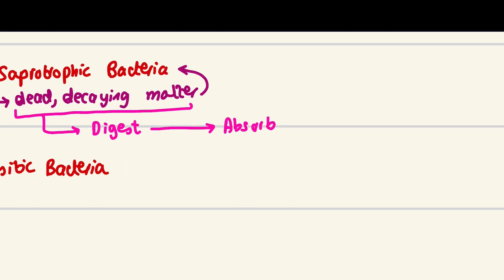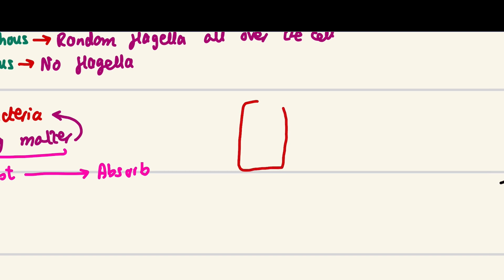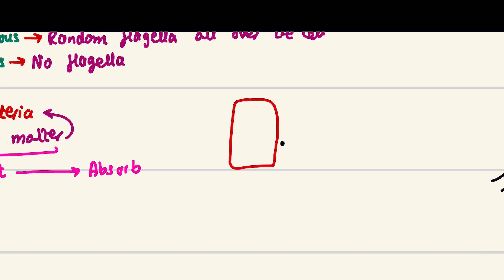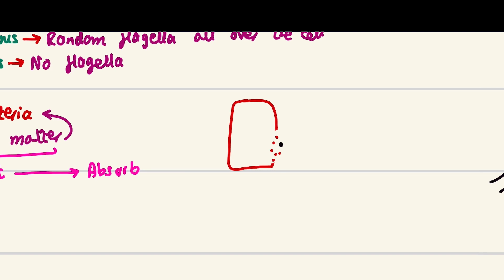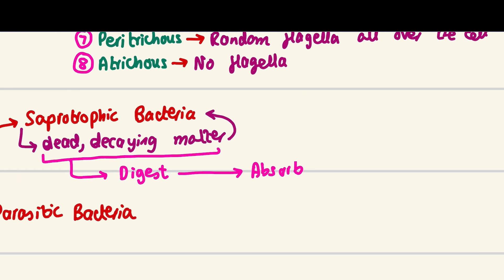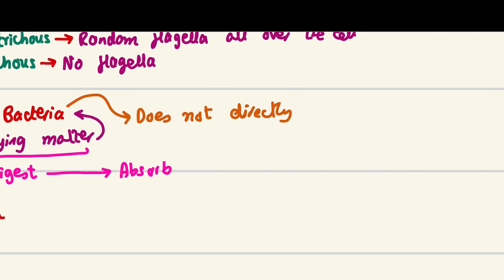For example, if there is a piece of bread lying around, the saprophytic bacteria will secrete enzymes that break it down — bread is made of starch, so it gets broken into glucose — and then the bacteria absorb the glucose. So the process is: digest first, then absorb.